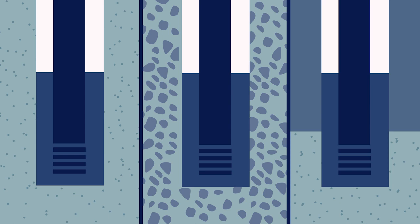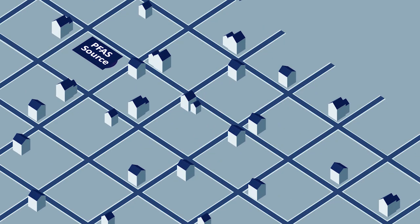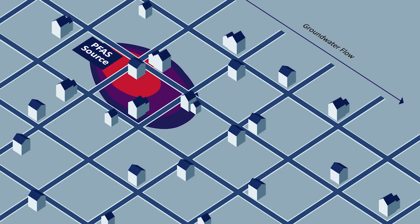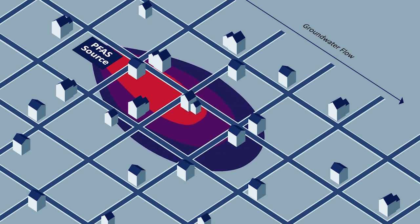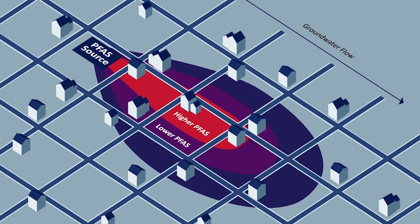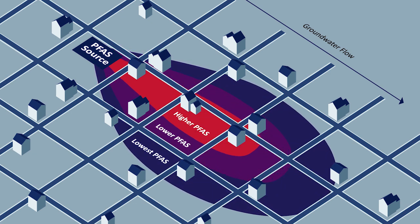How your well was constructed and how much water you use can also make a difference. This is a simple example of a plume — plumes often have different shapes and move at different speeds. Some wells may be closer to the plume than others, and wells that draw water from the center of the plume area could have higher amounts of PFAS in their water.